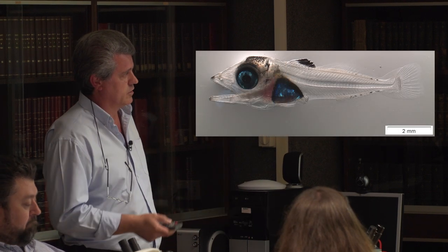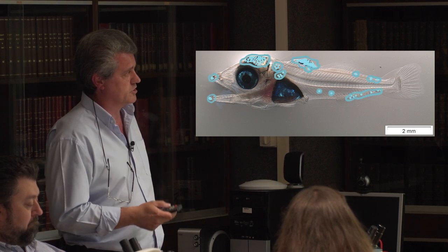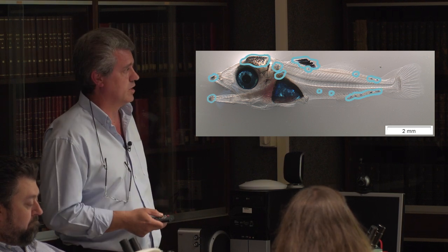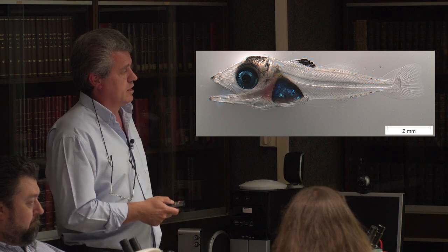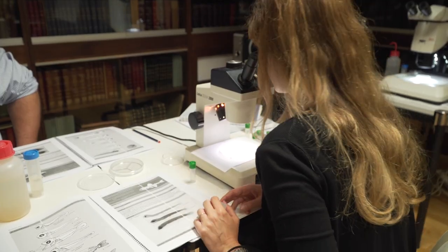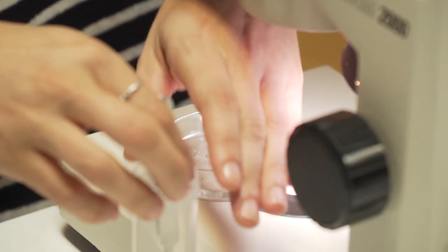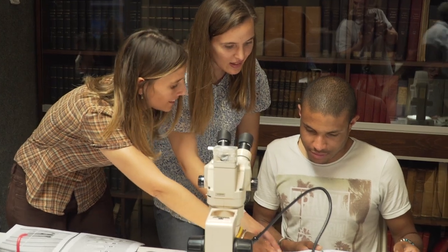Another very important character is the pigmentation pattern. Fish larvae have a variety of pigments, but after conservation and preservation, only the black pigment remains. So most descriptions are based only on the melanophores — the black pigment. This can still allow identification even at the species level.